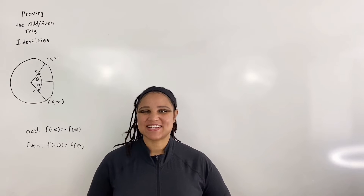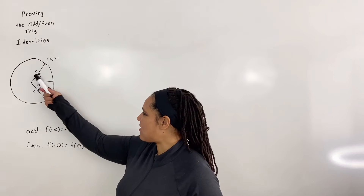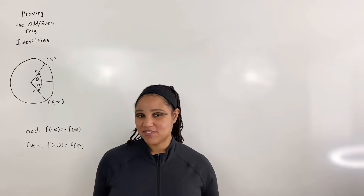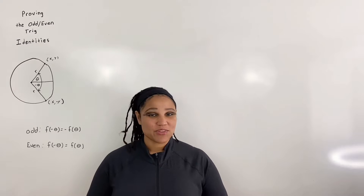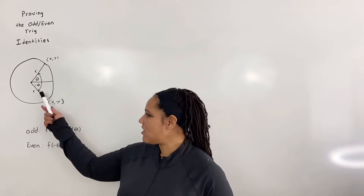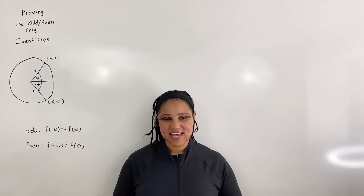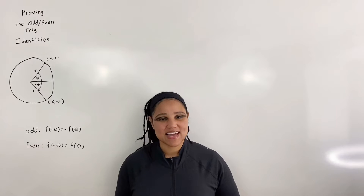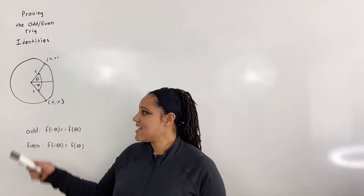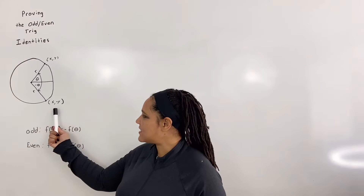Let us look at the six trigonometric functions beginning with a circle. Given a circle with radius r, let theta be an arbitrary angle. You can draw theta anywhere you like, but for convenience I will draw the angle in quadrant one without loss of generality. Since I draw theta in quadrant one, then I simply draw negative theta in quadrant four. It is important to note that theta and negative theta have the same magnitude; the only difference is that negative theta is measured in the opposite direction of theta from the positive x-axis. Let theta have terminal points (x, y), then negative theta will have terminal points (x, -y).